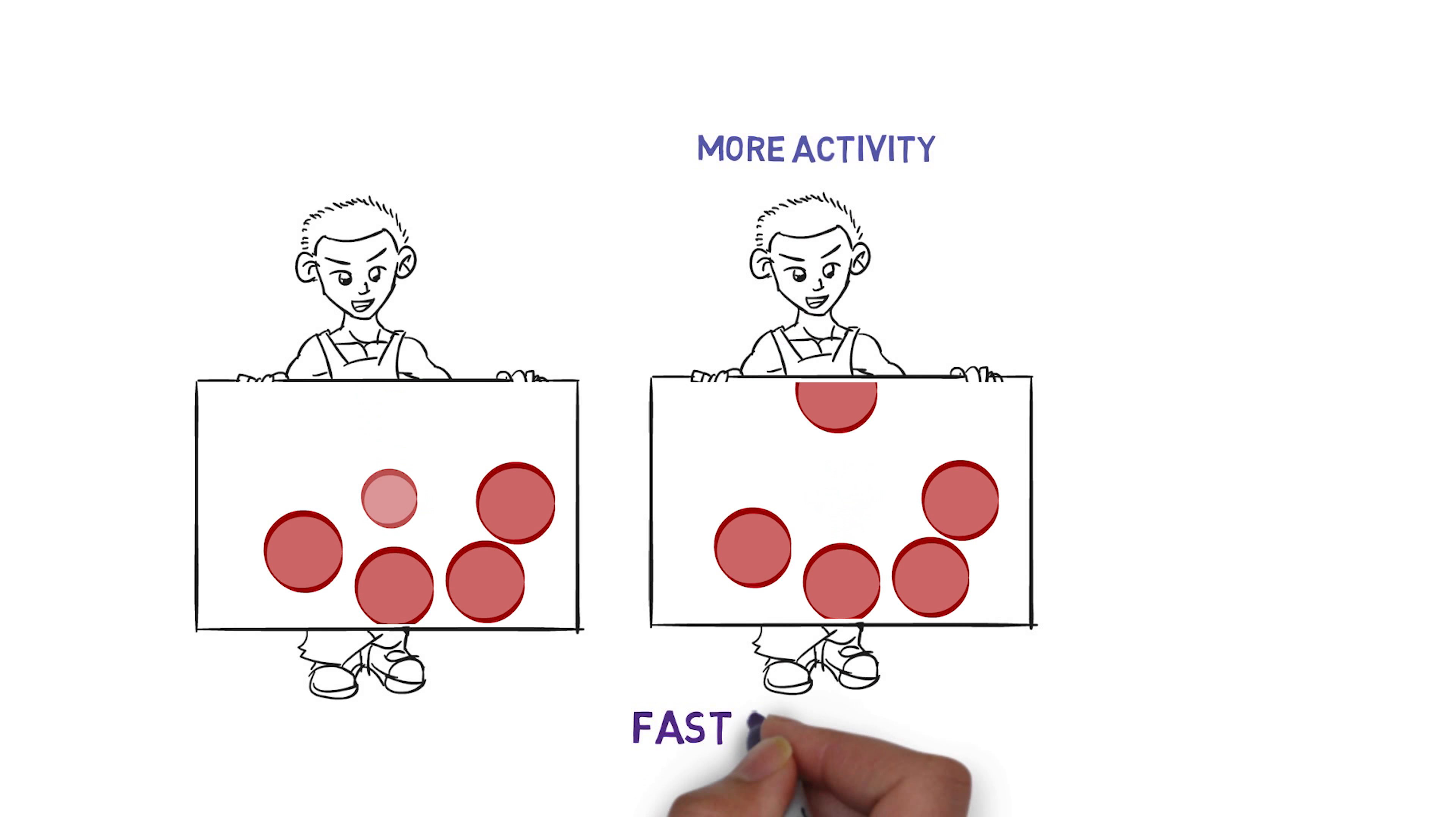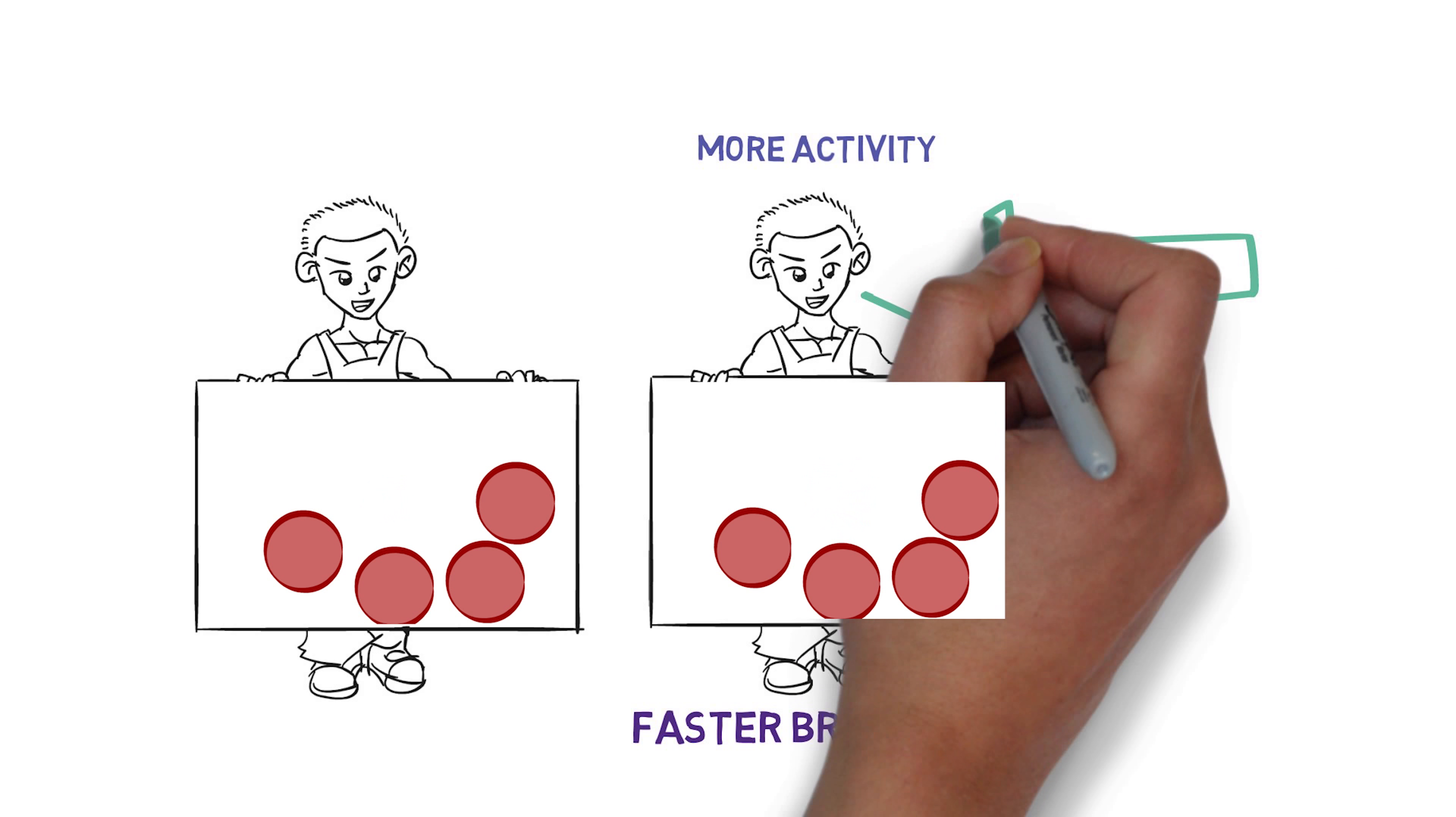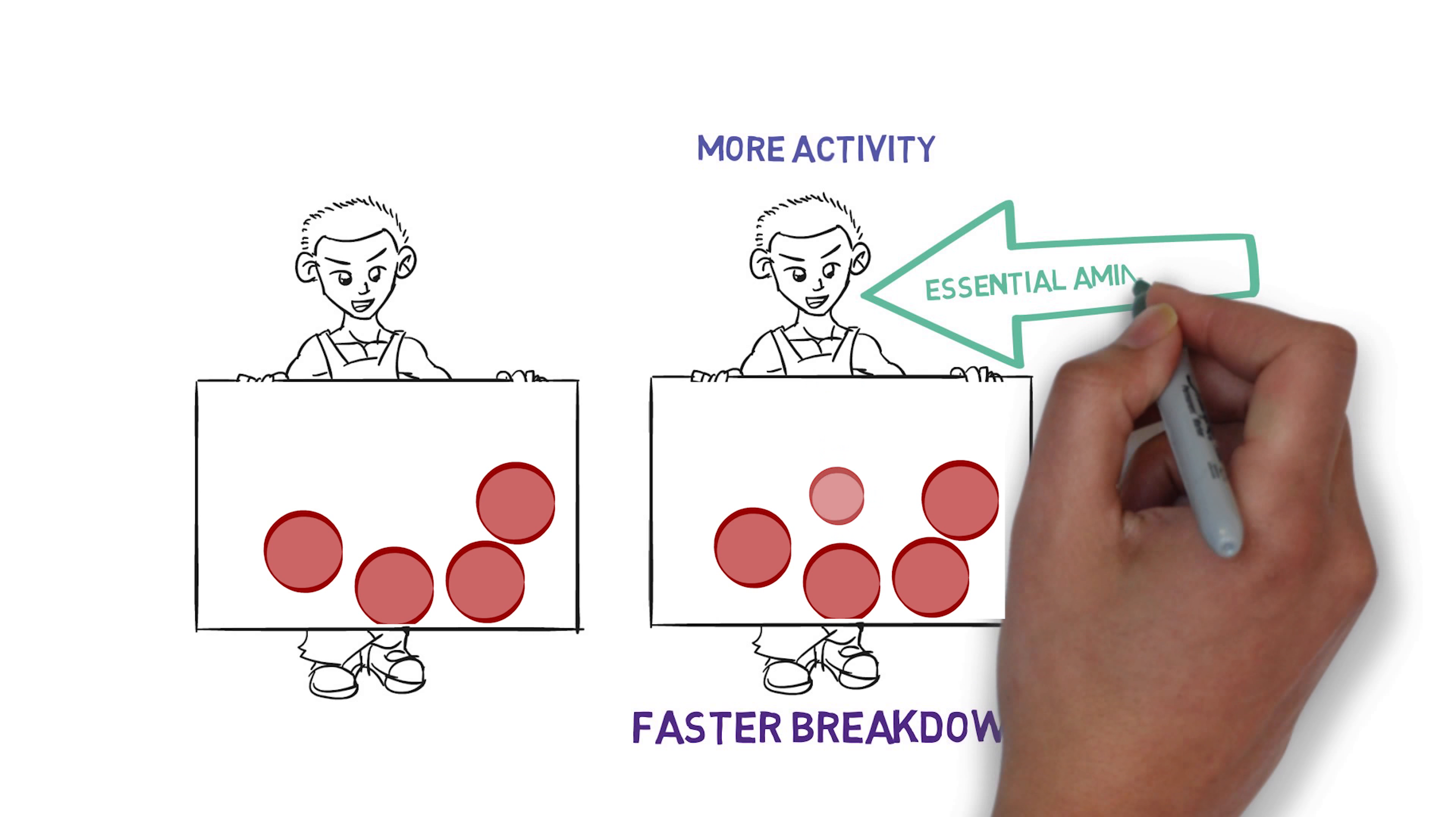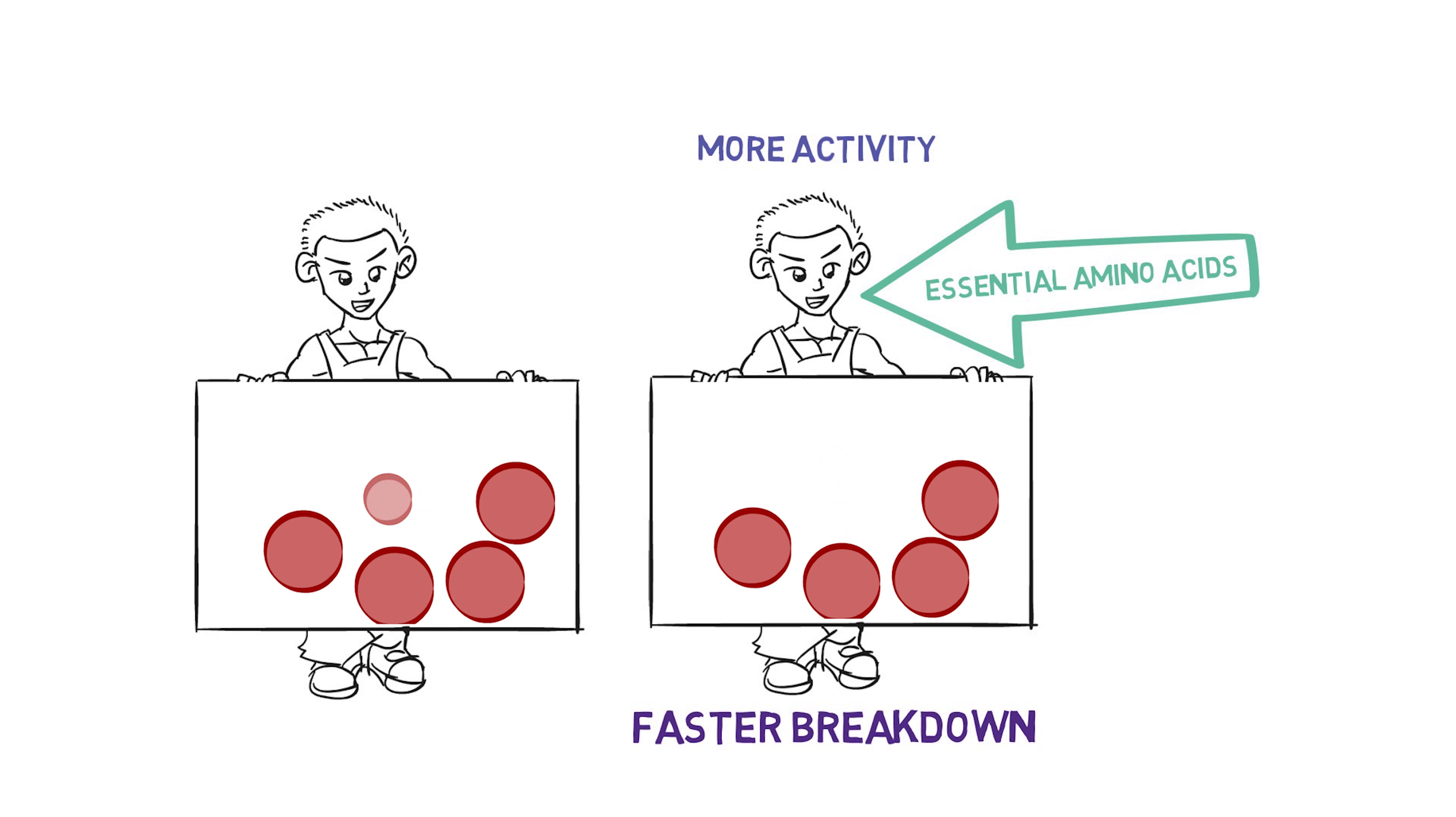If you engage in any type of training, you increase the breakdown rate even further. Staying alive and healthy means giving your body a constant supply of replacements through the food you eat, especially if one of your goals is to add muscle mass. In that case, you'll want to take in not only a sufficient amount, but the optimal amount. This is why getting all the amino acids we need in our diets is so important.